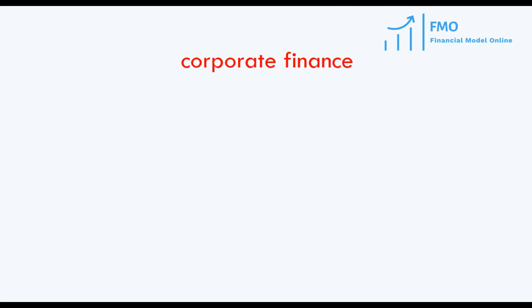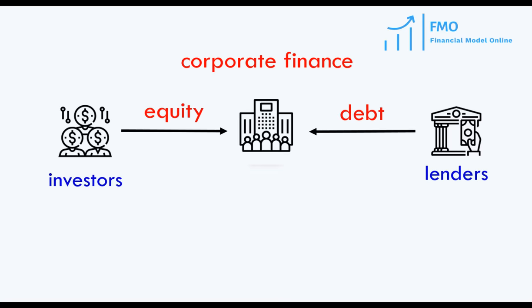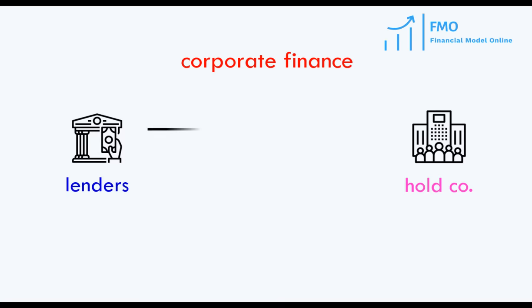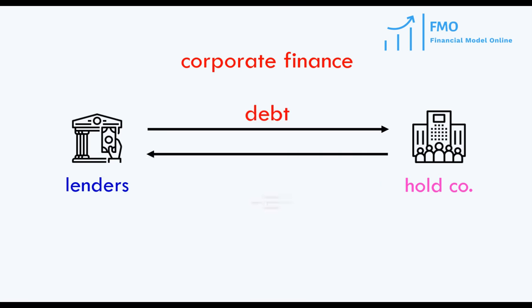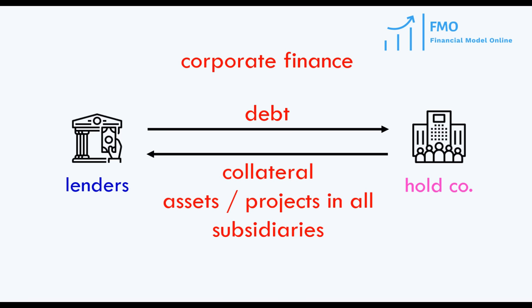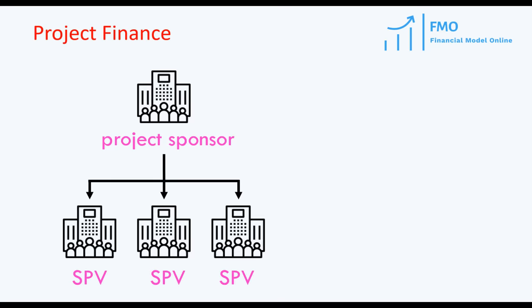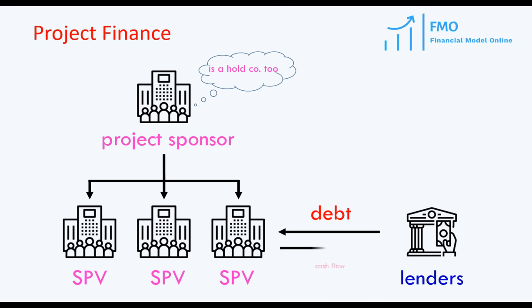So, how is this different from corporate finance? In corporate finance, investors and lenders inject capital into a holding company, which then initiates multiple different projects. These different projects serve as collateral for the debt. In case there is a problem with debt repayment or interest payments, the lenders can go after all the assets of the holding company and recover the debt through sale of those assets. In project finance, the project sponsor can have multiple SPVs with a specific project in each SPV, and the project sponsor can be a holding company too. When there is a problem with a specific project, the lenders cannot go after the project sponsor's other assets.